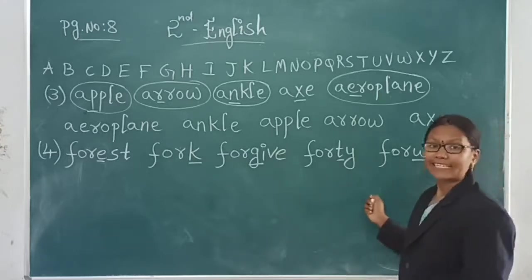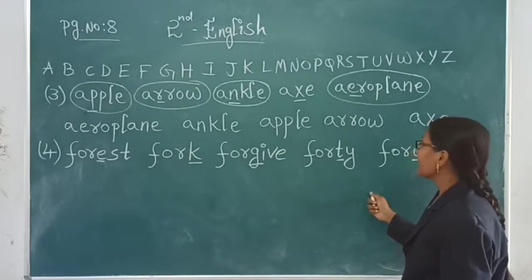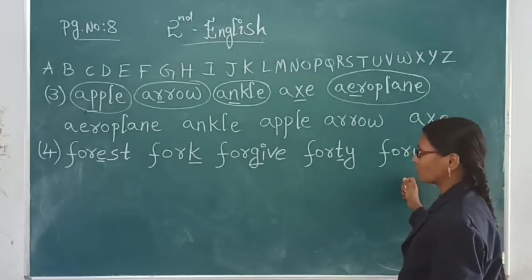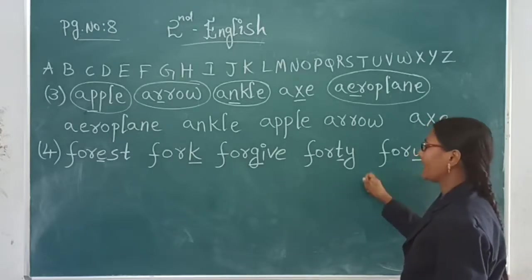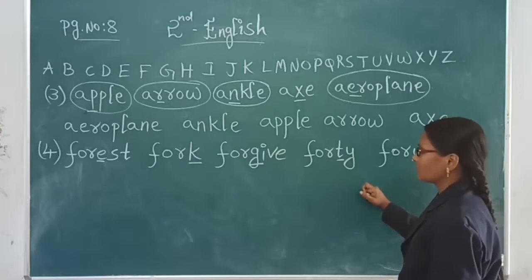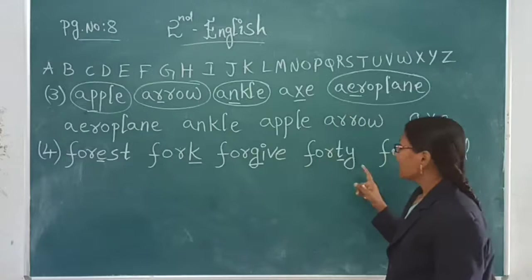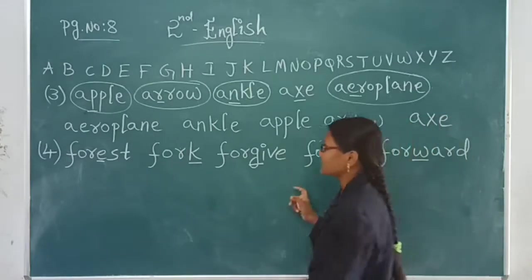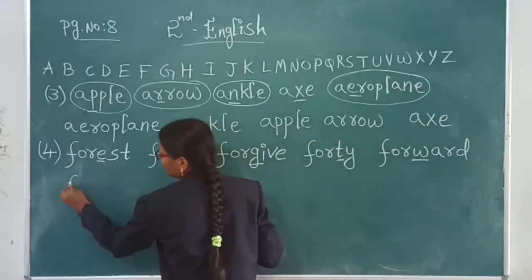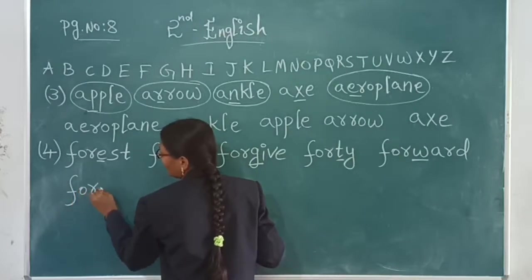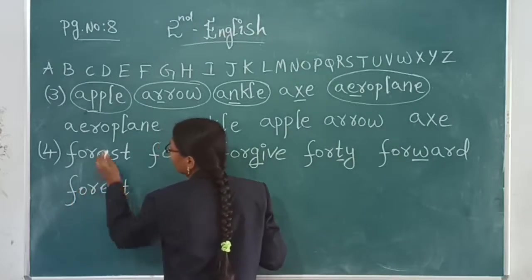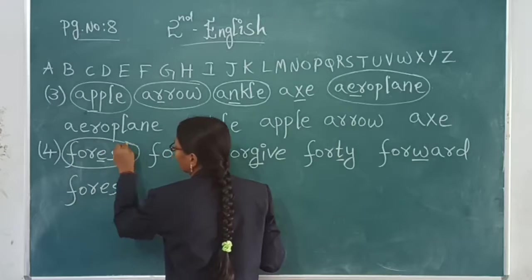Now alphabetical order we have to see. A, no. B, no. C, D, E. E is there. Forest. First thing here we can, forest. Now circle the forest.